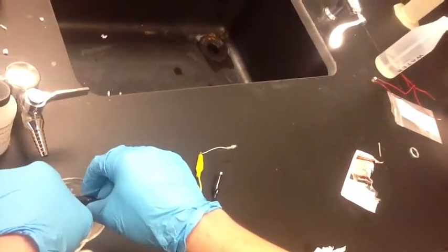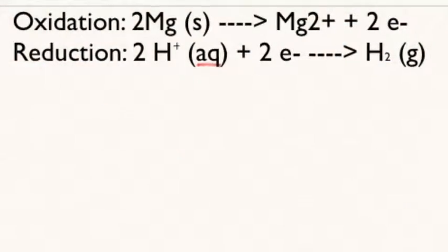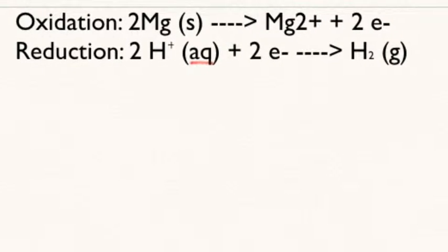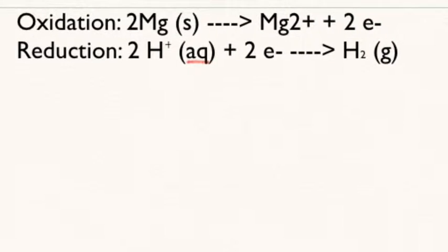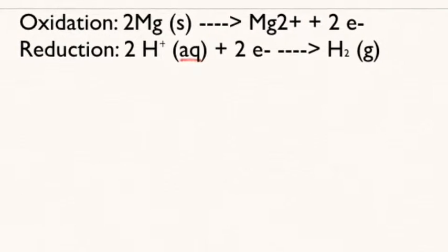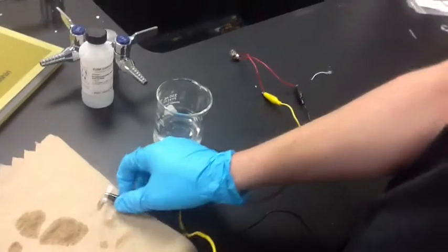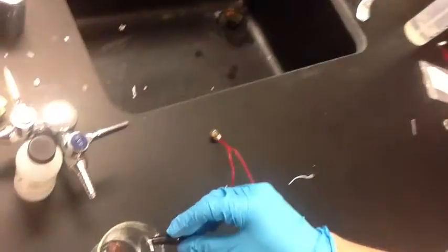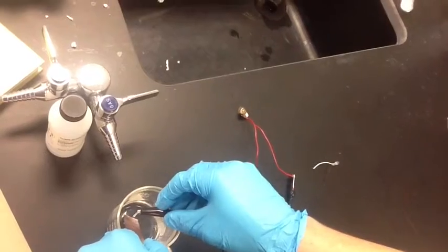The oxidation converts the solid magnesium strip into the magnesium ion and electrons, while the reduction converts hydrogen ions into hydrogen gas, which bubbles. This makes the magnesium both the cathode and the anode because the reduction occurs on the surface of the magnesium metal.